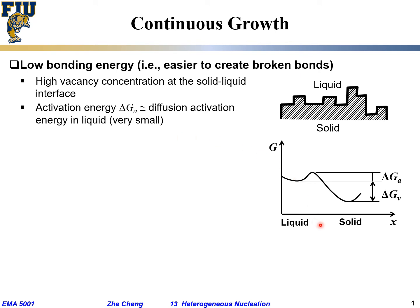We're plotting Gibbs free energy versus location. One side we have liquid, the other side we have solid — this is solidification. Between solid and liquid, delta Gv is the volume free energy, the driving force for liquid to go to solid. We're doing solidification below the melting point, so liquid has higher energy than solid. Before going from liquid to solid, you normally have to overcome a barrier, but in this case the activation barrier is very low — just your diffusion activation energy within the liquid, a very low value.